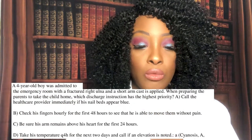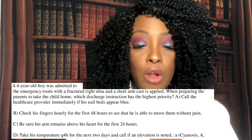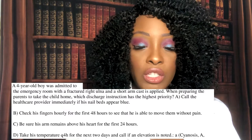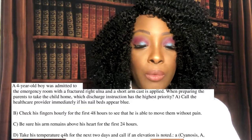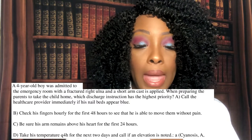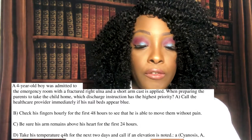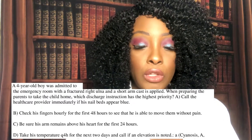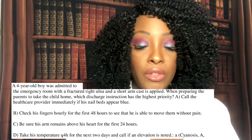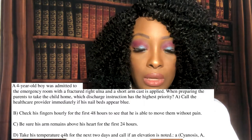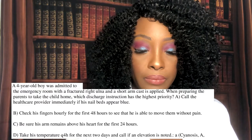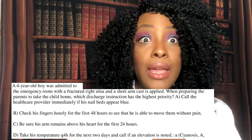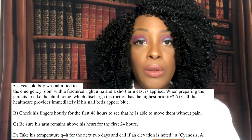Question six: A four-year-old boy is admitted to the emergency room with a fractured right ulna and a short arm cast is applied. When preparing the parents to take the child home, which discharge instruction has the highest priority? A) Call the healthcare provider immediately if his nail beds appear blue. B) Check his fingers hourly for the first 48 hours to see if he can move them without pain. C) Be sure his arm remains above his heart for the first 24 hours. Or D) Take his temperature every four hours for the next two days. The correct answer is A.